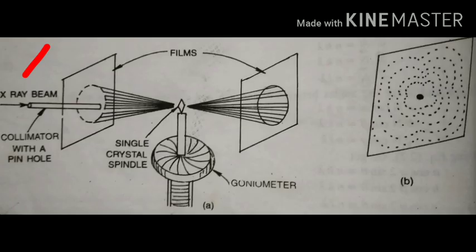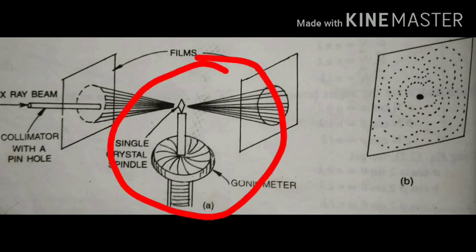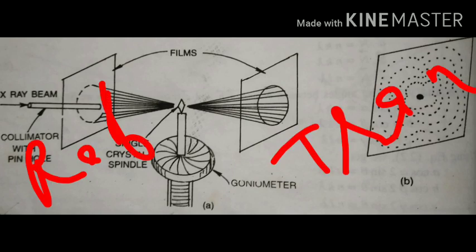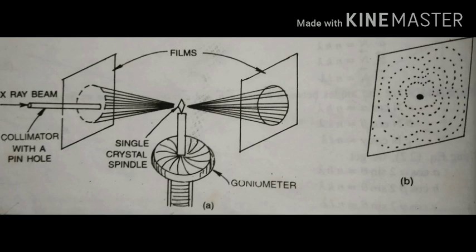In the experimental setup, X-rays pass through a pinhole arrangement and fall on the crystal, which is held stationary. After striking the crystal, two things happen: some rays get reflected and some get transmitted. Two photographic films are placed — one to collect the reflected rays and another for the transmitted rays. The rays that satisfy 2d sin θ = nλ form spots on the photographic film, giving us a series of spots as the diffraction pattern.